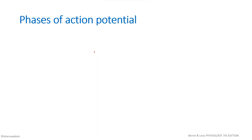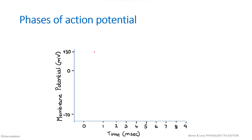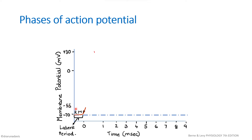Now we can write about the phases of action potential. To depict that in a diagram, we draw time in milliseconds on the x-axis and membrane potential in mV on the y-axis. The resting membrane potential for a neuron is minus 70 mV. When a stimulus is applied, after a brief latent period, there will be an increase in potential from minus 70 to minus 55 mV. Once it reaches this threshold potential of minus 55 mV, there will be a rapid increase — this phase is known as depolarization.